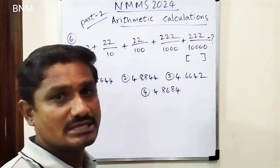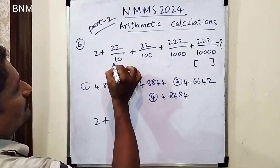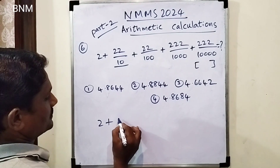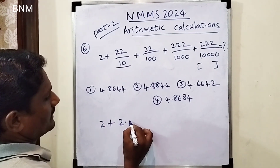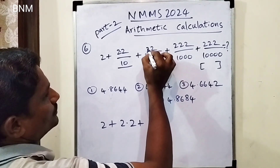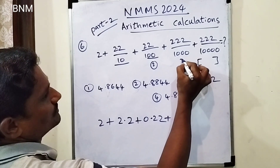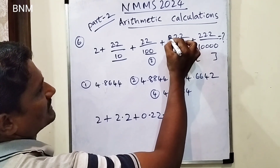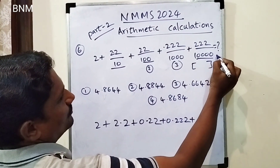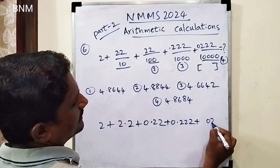First, we need to match the decimals. The 10th place has 2 digits. There are zeros — 1, 2, 3: three digits, meaning three zeros after the decimal point. Here we have 4 zeros, giving us 4 digits after the decimal point.